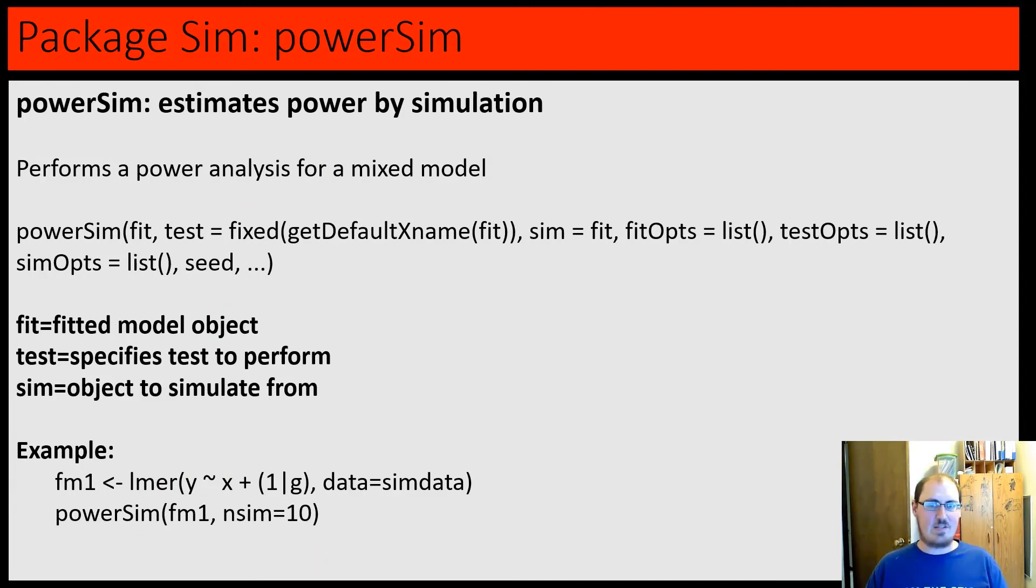powerSim estimates power by simulation. You'll need to enter a fitted model, and you also need a test, and then a simulation object to simulate from. By default, the test, if you leave test blank or sim blank, test will just be the first fixed effect. And then, if you leave out sim, it will just be default to whatever this fit model object is. Also, there's obviously a lot of other options you can do here, including something like setting your own number of simulations.